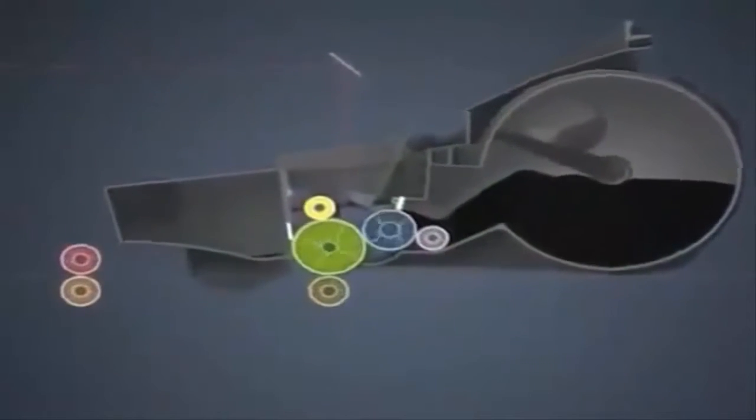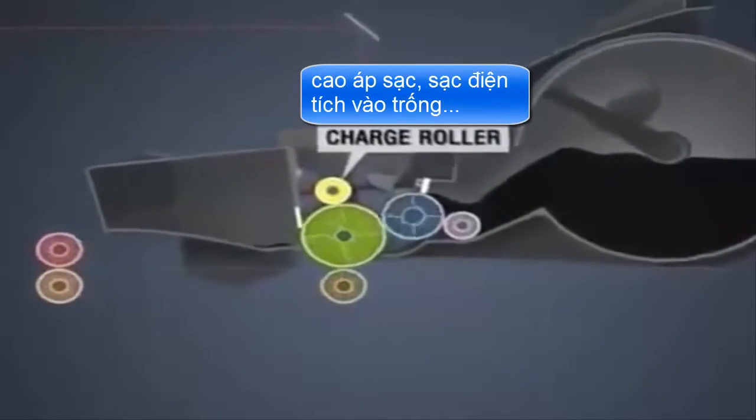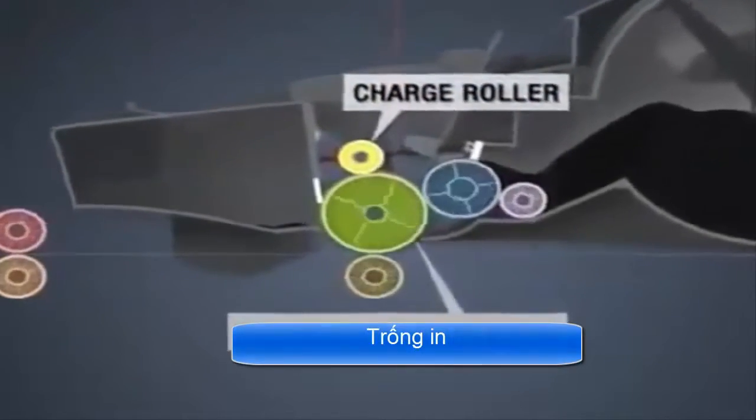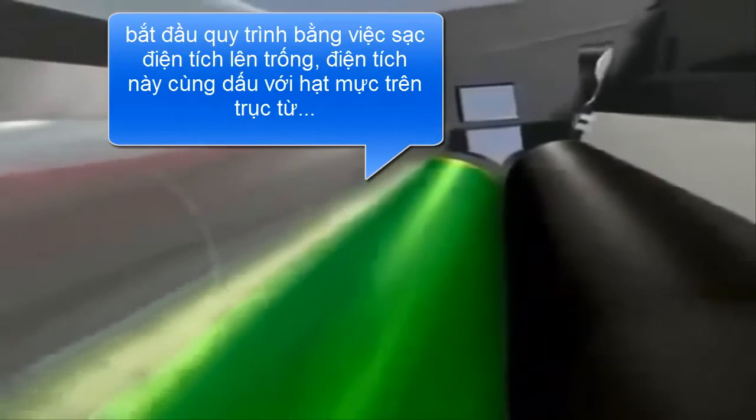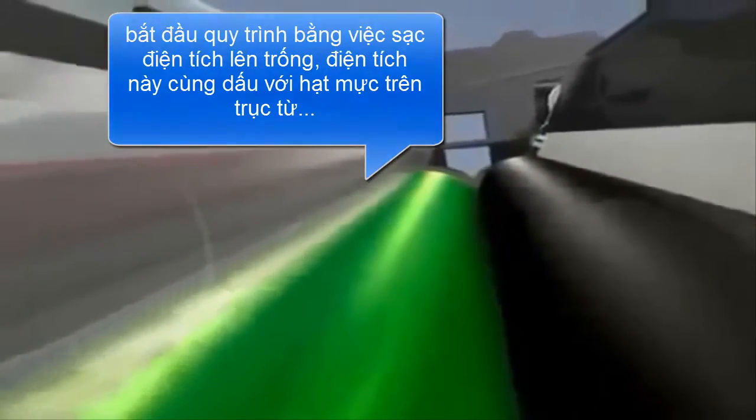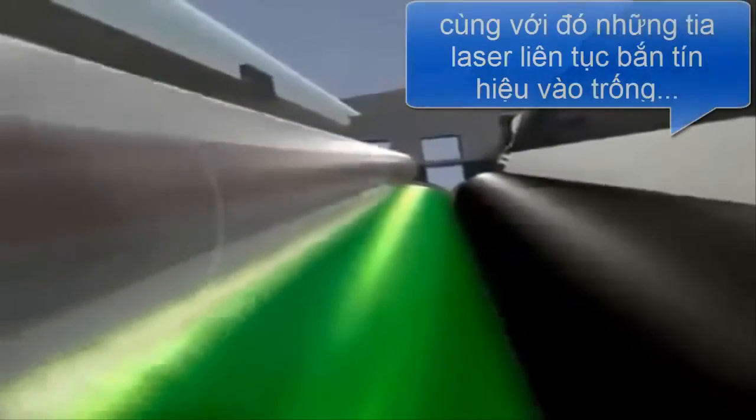The process begins with the charge roller, which applies a uniform charge to the surface of the photoconductor drum. Photoconductor drums are highly sophisticated components, precisely formulated to the power and wavelength of the laser print engine for which they are designed.